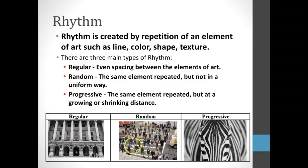The next type is something called random rhythm. Instead of having equal spacing or progressively different spacing, there's going to be no uniformity to the way that we see that thing repeating. So in this image there's a repetition of people, but there isn't really a mathematical way to determine how that spacing happens. They repeat, they're all over the place, they take up the space in the image, but there isn't any rhyme or reason to the way that the rhythm goes on.